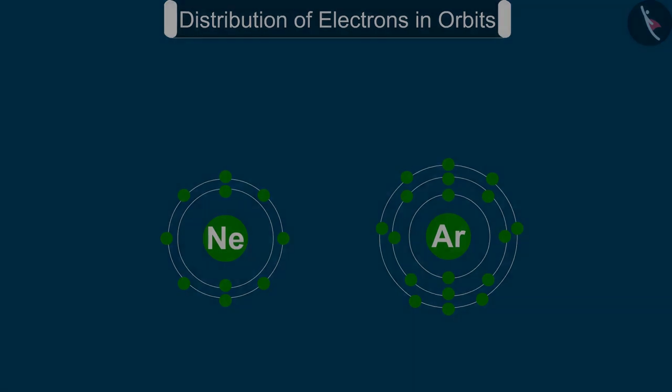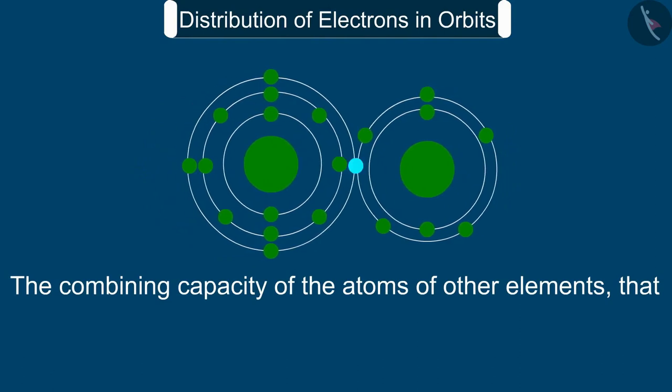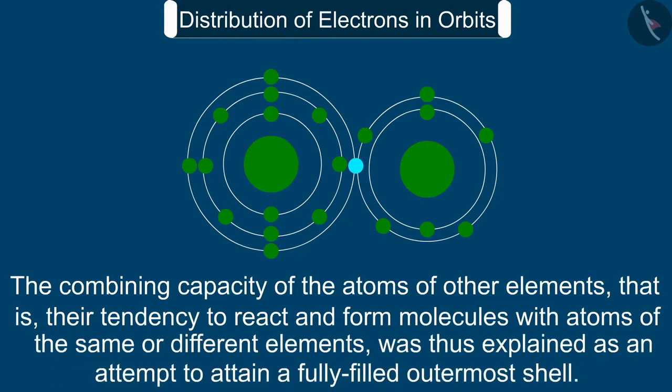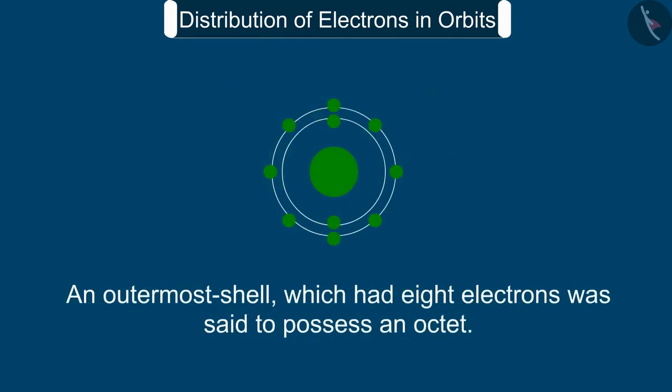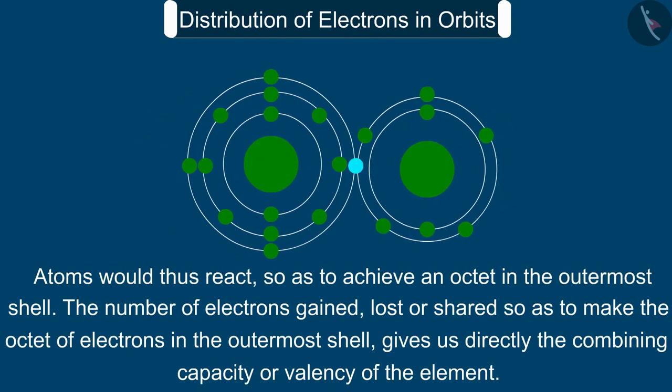The combining capacity of the atoms of other elements, that is, their tendency to react and form molecules with atoms of the same or different elements, was thus explained as an attempt to attain a fully filled outermost shell. An outermost shell which had 8 electrons was said to possess an octet. Atoms would thus react so as to achieve an octet in the outermost shell.